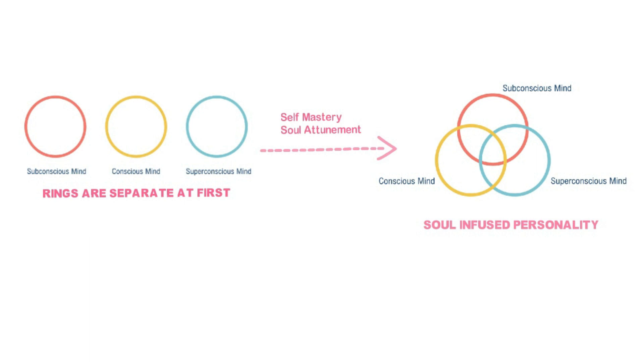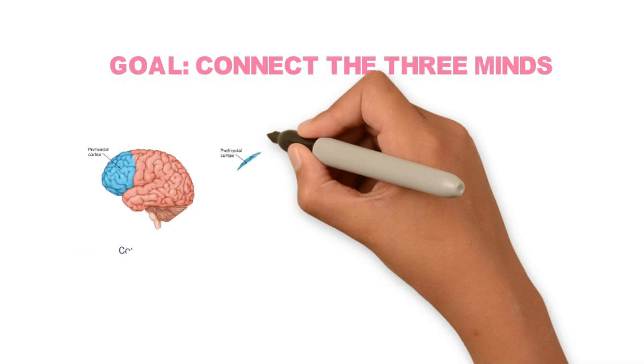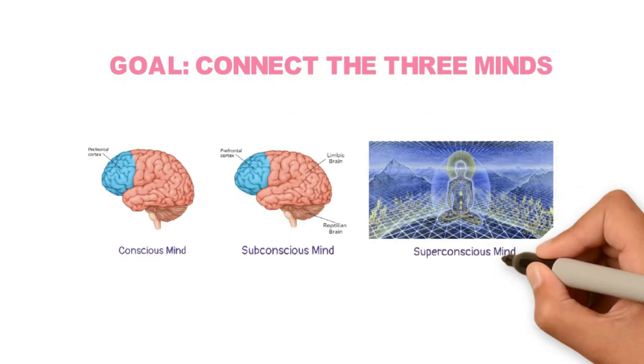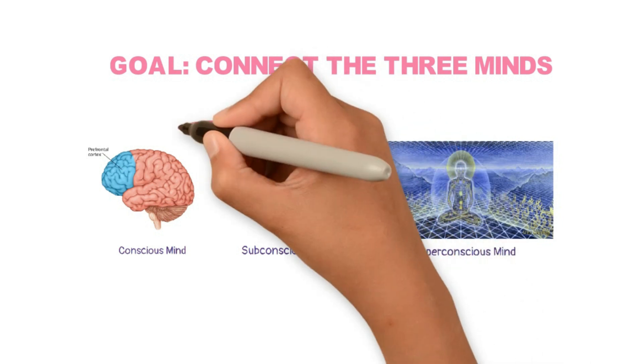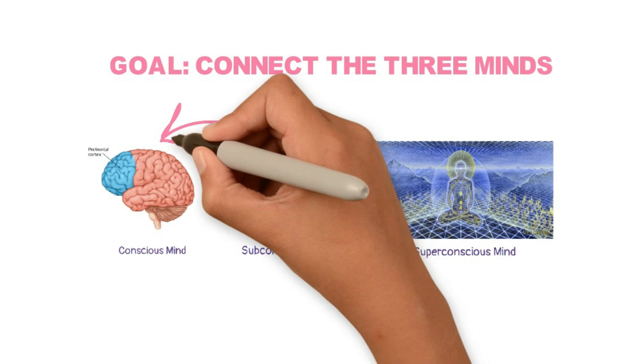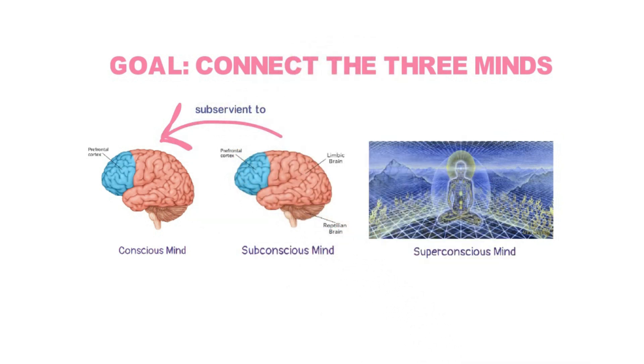Now our goal today is to learn how to interconnect these three minds, these three rings, so that if you were to ask them a question, all of them would give you the same answer. And this goal is achieved when the subconscious mind becomes a humble servant of the conscious mind.